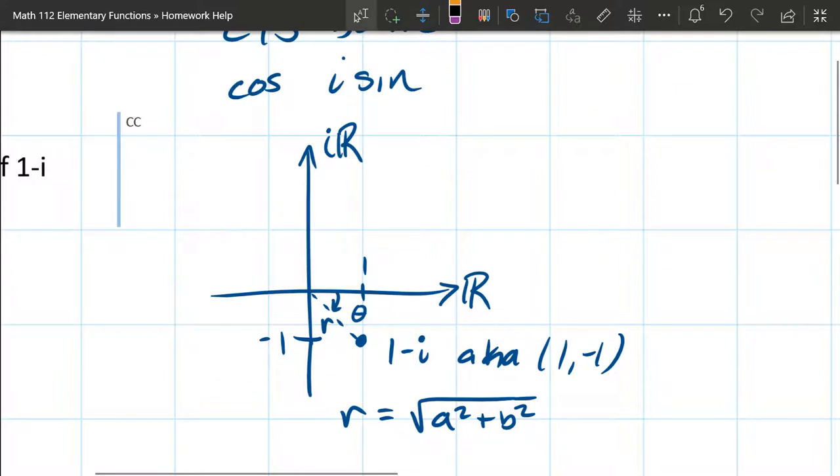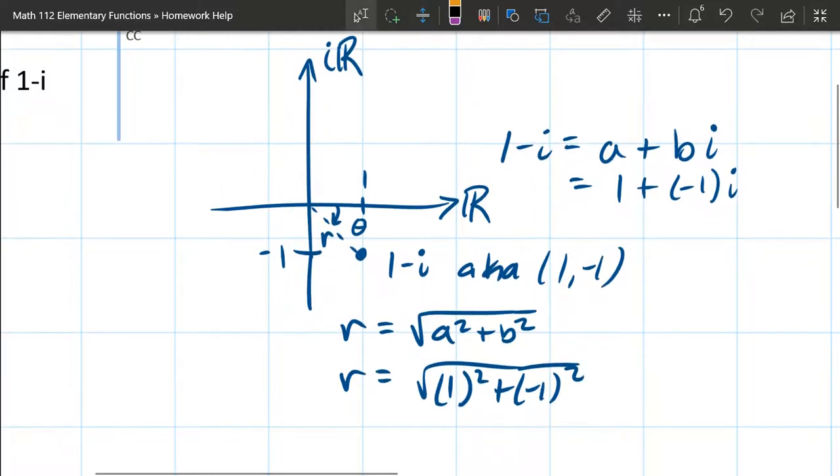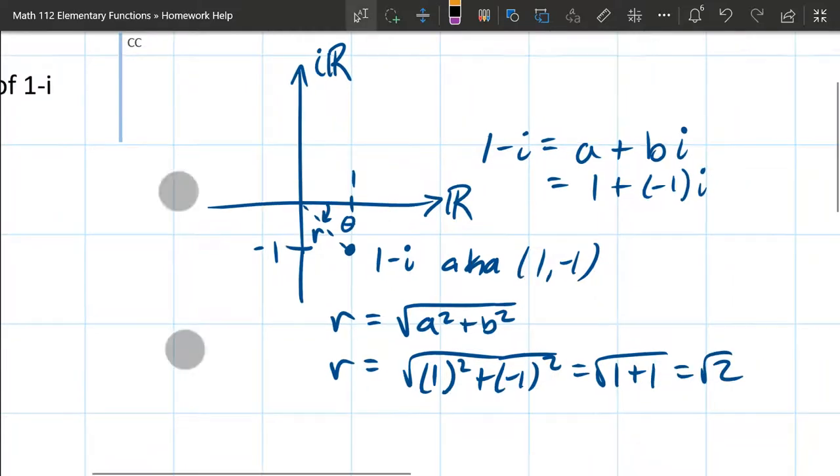So r is going to be the square root of a squared plus b squared, where a is 1. 1 minus i, you want to think of this as a plus bi. So for us here, a is going to be 1, and b is negative 1. So you can see a is 1 and b is negative 1. So to get the radius, we got square root 1 squared plus negative 1 squared. You square both of these, you get positive 1 plus positive 1. So our radius is going to be square root 2.